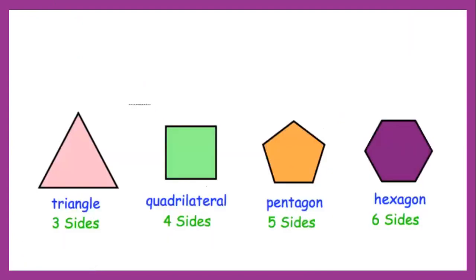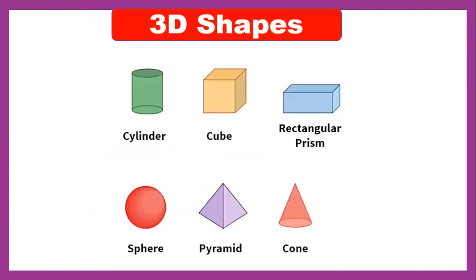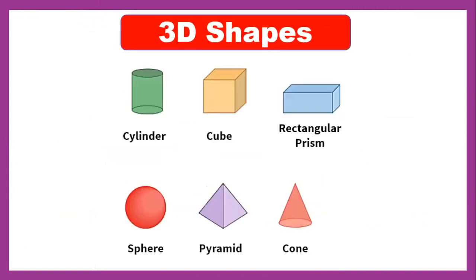We discussed how many sides for the pentagon and hexagon. We also talked about some 3D shapes. The first one is cylinder. 3D shapes means you can see the depth, length, and width. Cylinder, cube, rectangular prism, sphere, pyramid, and cone.